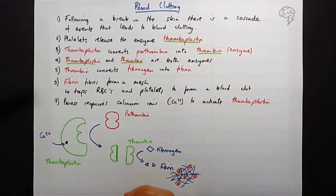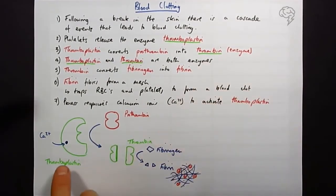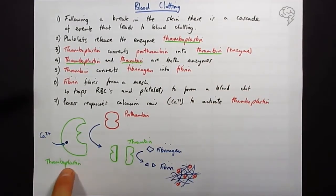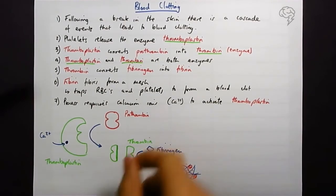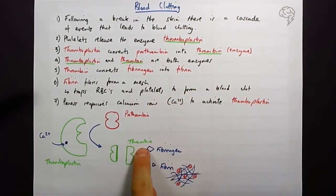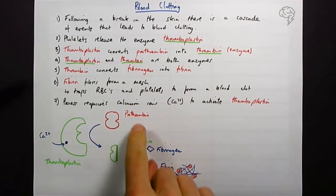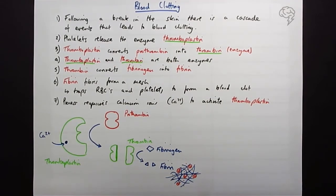If we go from the order, we go thromboplastin comes first, and this is the longest word, it's got most letters in it. If you count the number of letters in it, then we go to prothrombin, that's the next one, and is converted into thrombin. And so every single word gets shorter each time, and so that's a nice easy way of following it through.